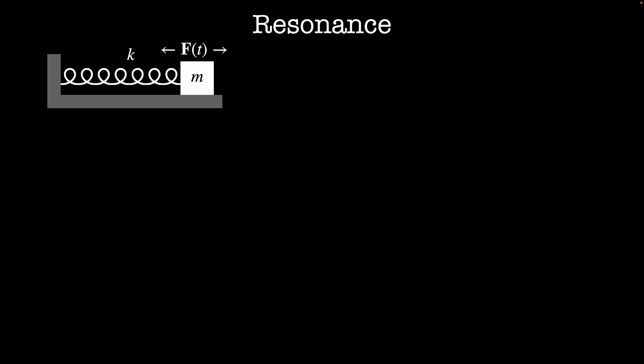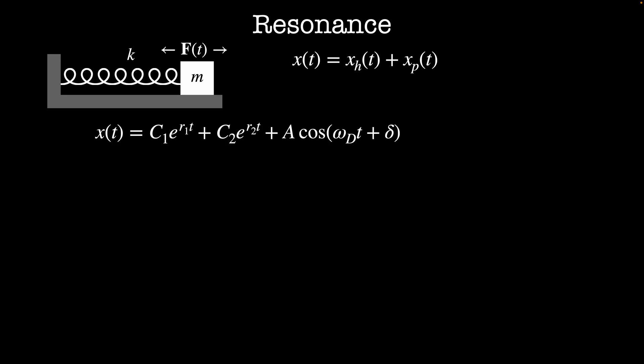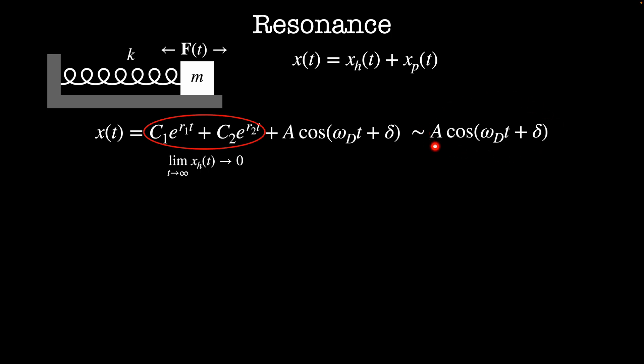So what does the trajectory of a damped driven oscillator look like? The full solution is the homogeneous solution from the last video plus the particular solution just worked out. The homogeneous solution has the form c1 e to the r1 t plus c2 e to the r2 t. Both terms decay exponentially, and even if there is oscillatory motion from imaginary r values, the amplitude still decays exponentially. At long times, the homogeneous solution decays to zero, so the trajectory just looks like the particular solution: a times cosine(omega_d t plus delta).